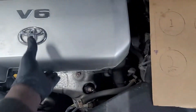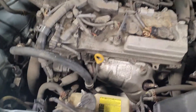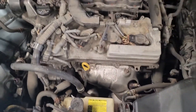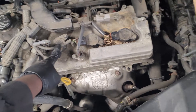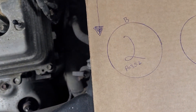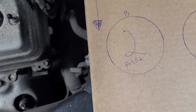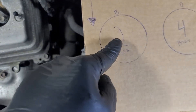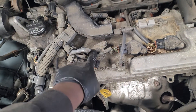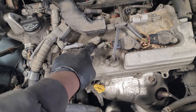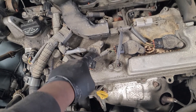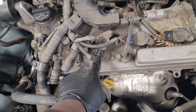If we take the engine cover off, we get a better view. The code I'm having is P0352, which is cylinder 2. Cylinder 2 is right here, and the code is saying that my ignition coil is bad — that's where the code is coming from.